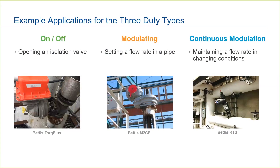For modulating service, we have an example of a Bettis M2CP on a pipe controlling flow rate of drilling fluid down into a well in the Middle East. Modulating service is not precise control, but at 1,200 starts per hour, we are able to maintain a basic flow rate in cases where precision is not required.